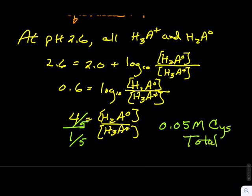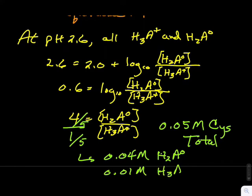If we have 0.05 molar cysteine total, then there must be 0.04 molar H2A zero and 0.01 molar H3A plus.